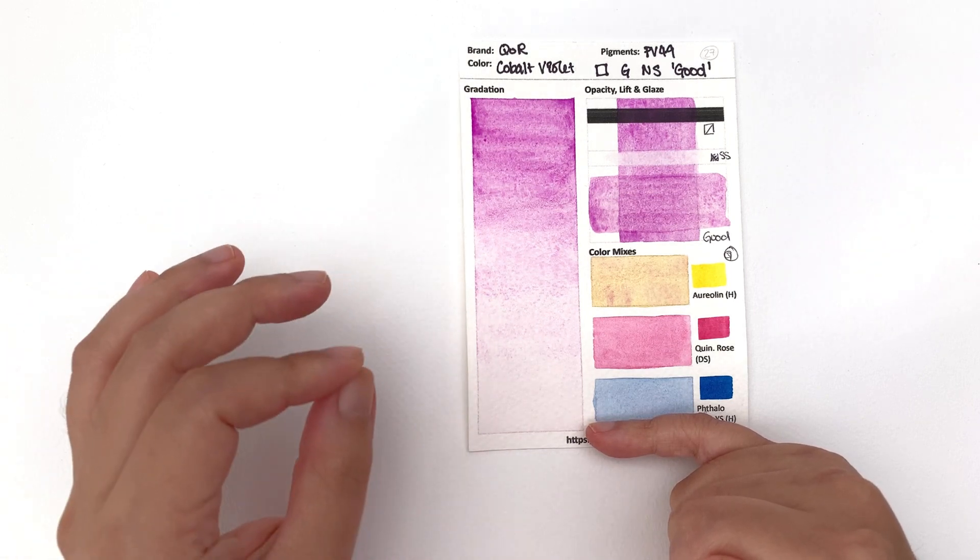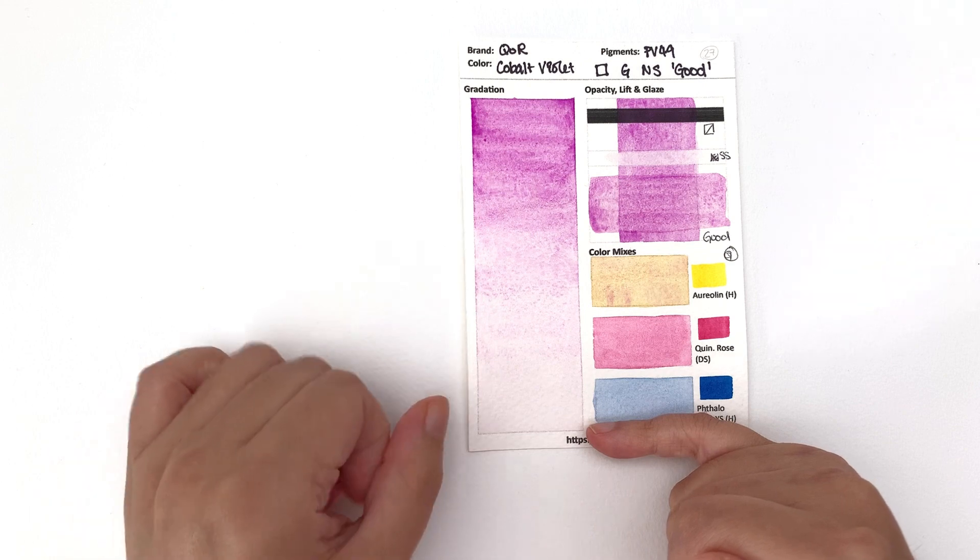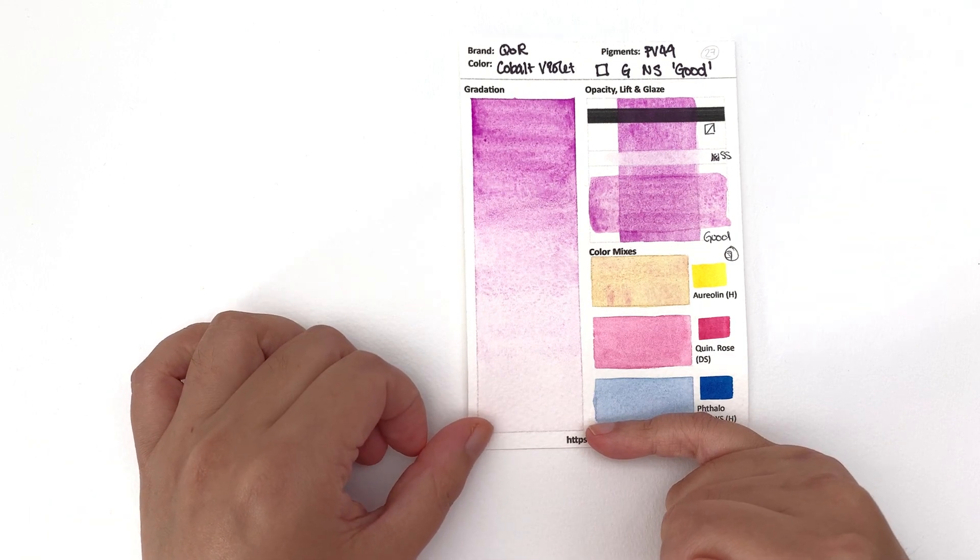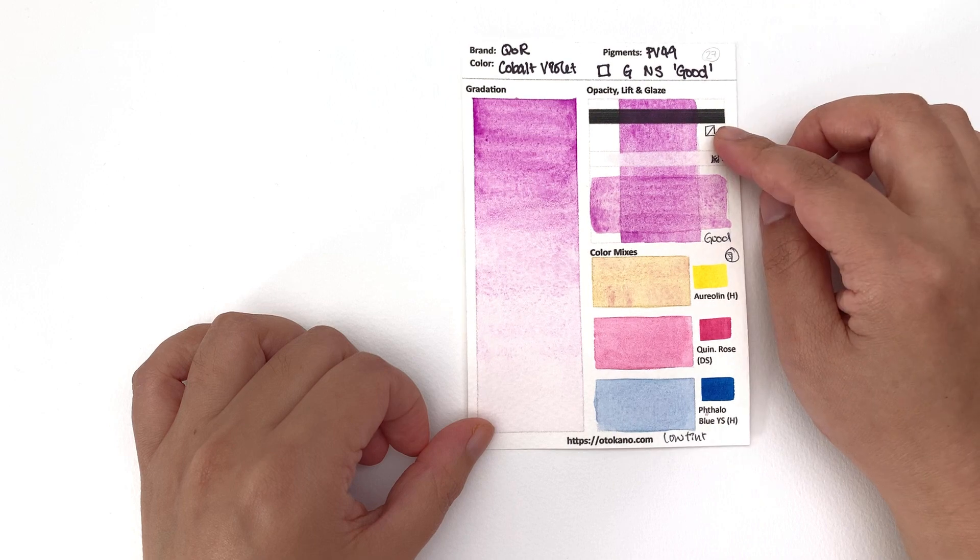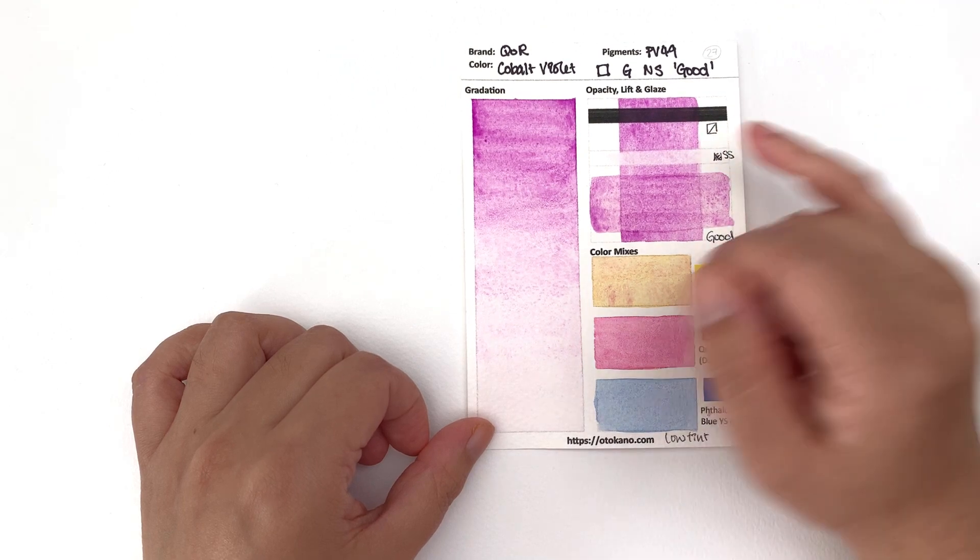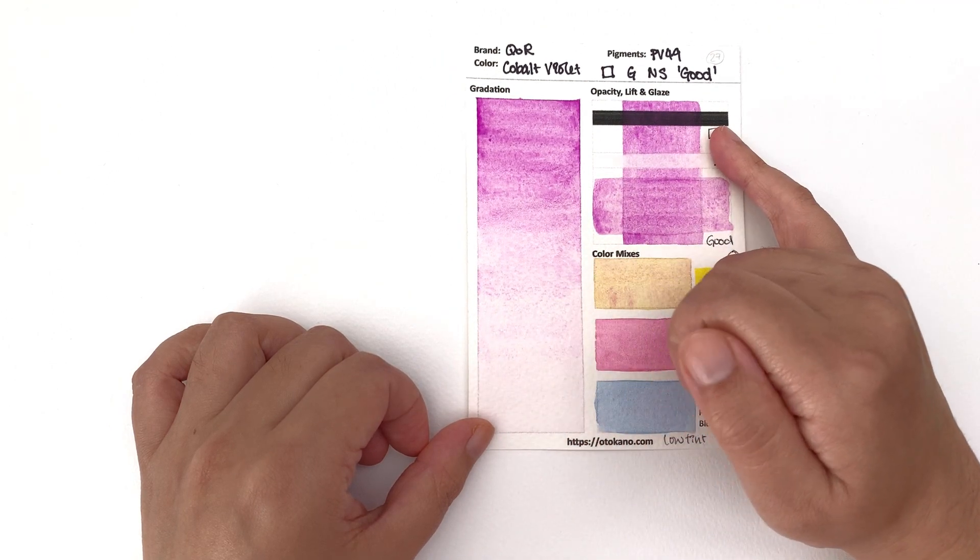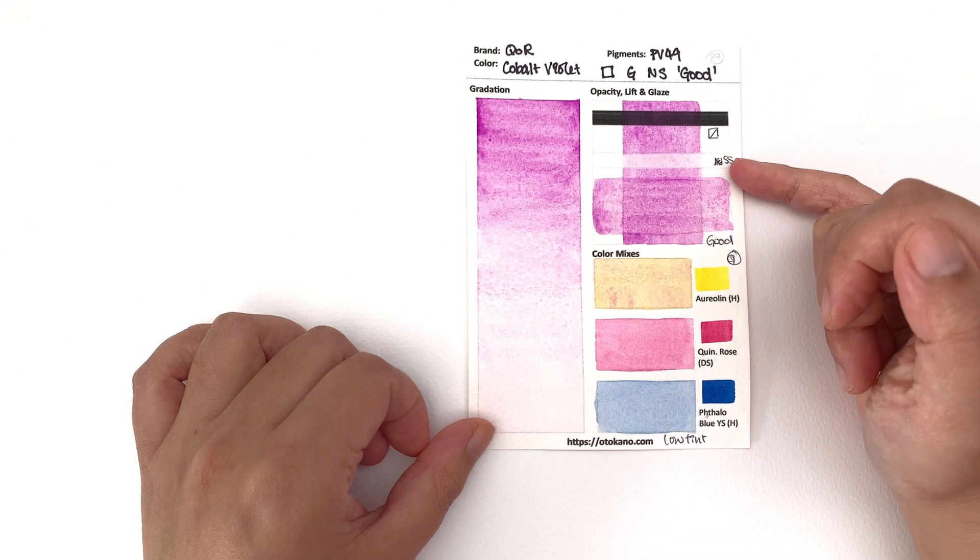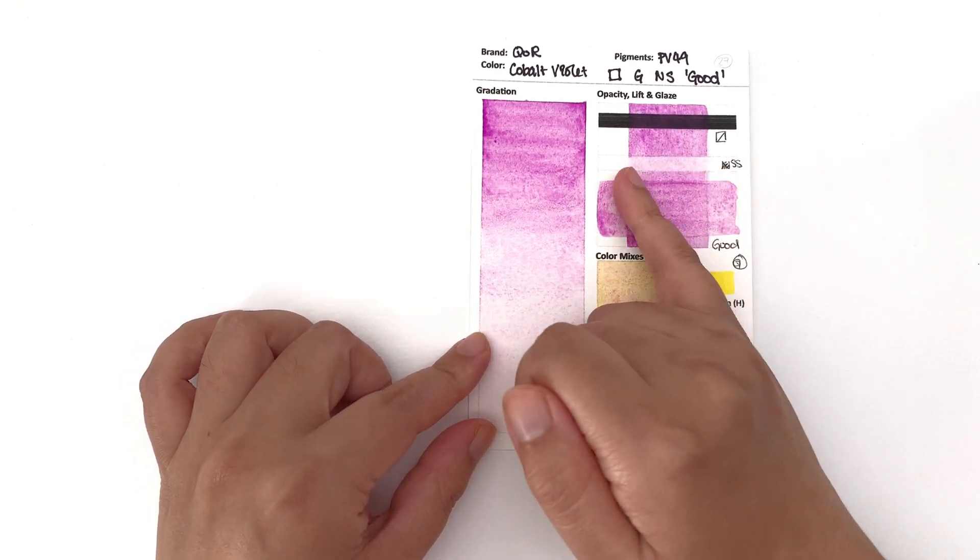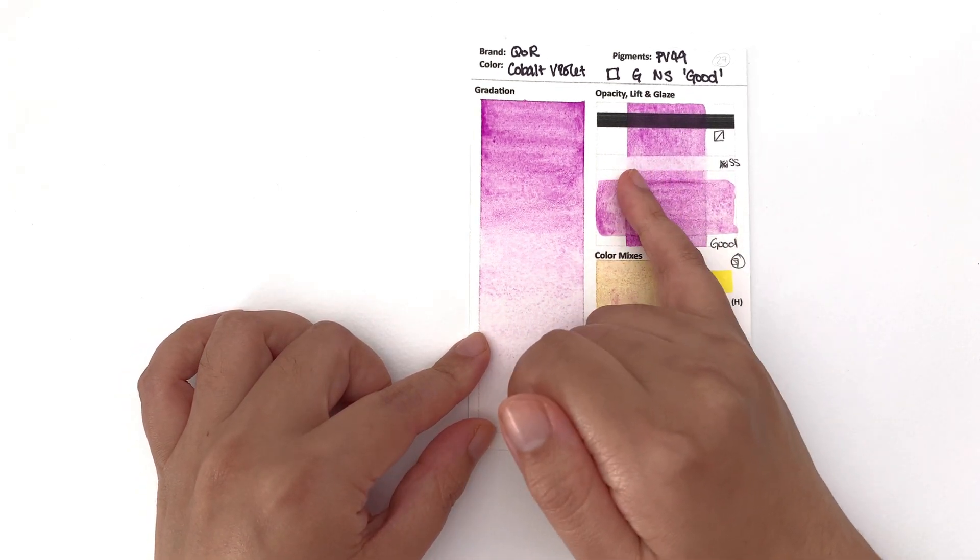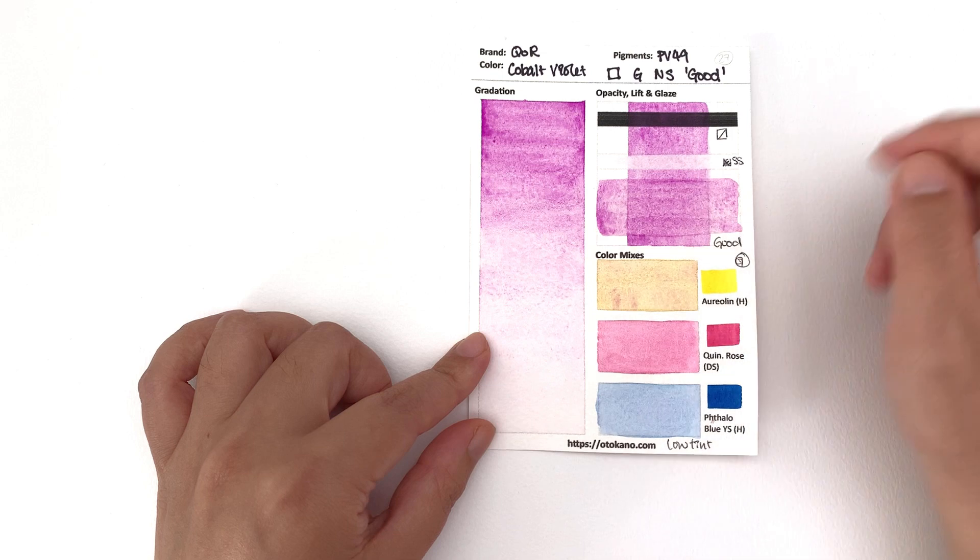It is classified as transparent but I would say it's semi-transparent. I can see some deposits happening here. It's classified as non-staining. I would argue that it's semi-staining. I can definitely still see the violet color on the paper so I wouldn't call this a non-staining color.